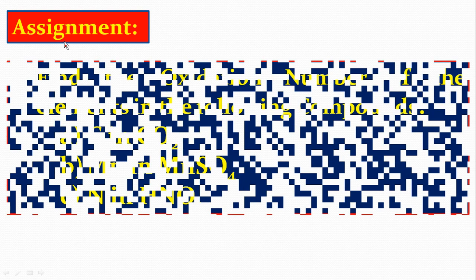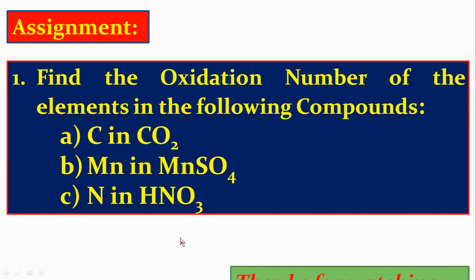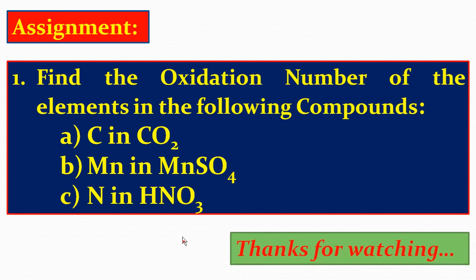Now come to the assignment. Find the oxidation number of the elements in the following compounds: A) C in CO₂, B) Mn in MnSO₄, C) N in HNO₃. You have to work out these problems in your fair notebook and copy all the problems there as well. Thank you, students.